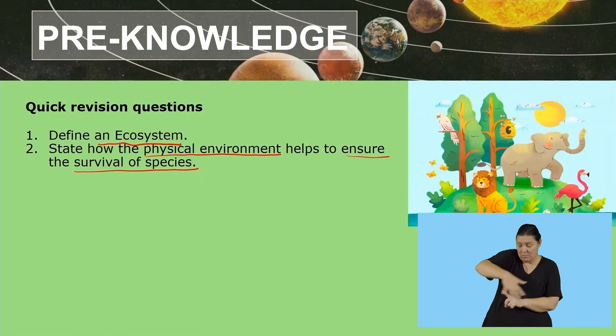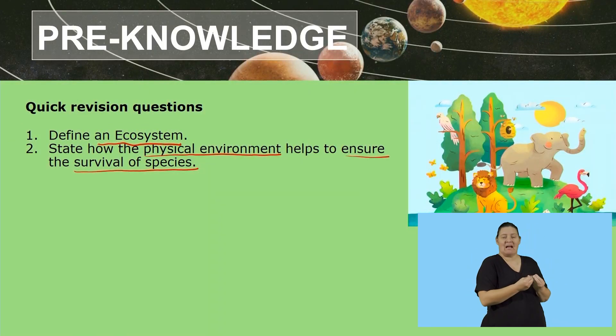Those are the two questions that you have to already answer in your brain. You don't have to write them down because it's just a quick revision to remind us how much you know on this topic. What is an ecosystem? You need to be able to define that term. Secondly, you need to tell me how the physical environment helps to ensure the survival of species in that environment.